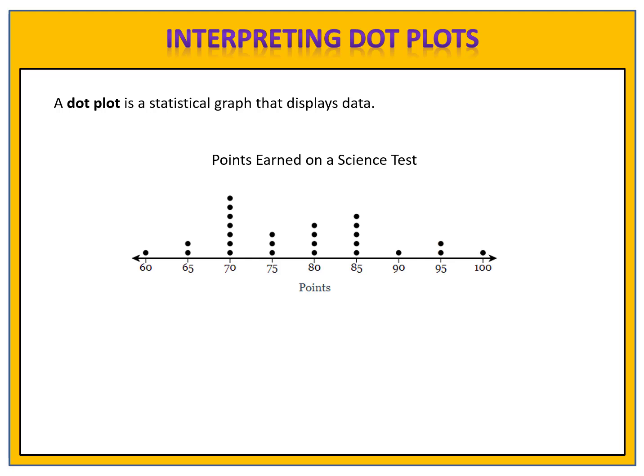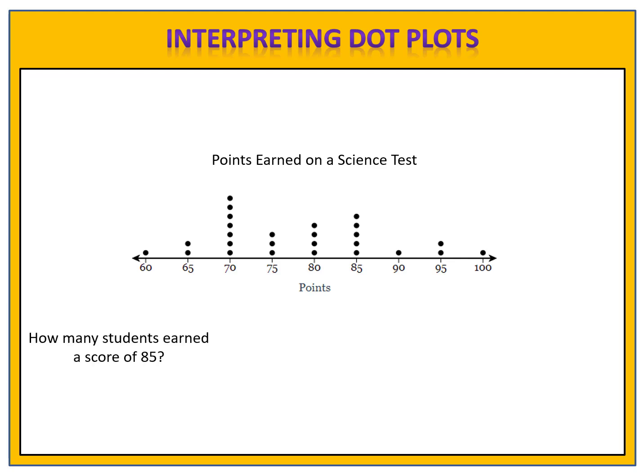A dot plot is useful because you can analyze the information and answer many questions. Let's take a look at some possible questions. One question is: how many students earned a particular score? How many students earned a score of 85? We look at the dot plot, find the score of 85 points, and count the dots. There are five dots, so five students earned a score of 85.